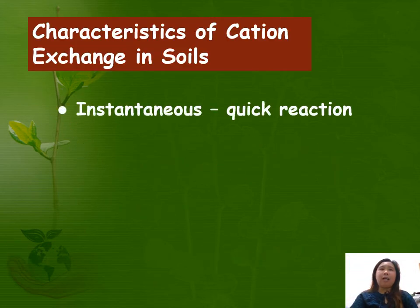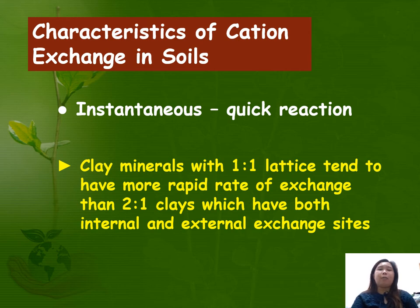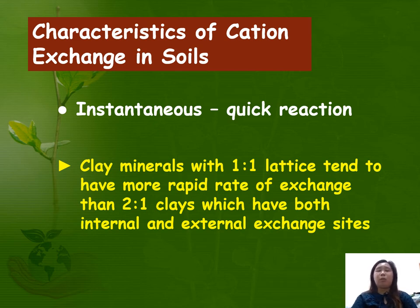Another characteristic is that the reaction is instantaneous — there is a quick reaction. Clay minerals with a 1:1 lattice tend to have a more rapid rate of exchange than 2:1 clays, which have both internal and external exchange sites. For example, 1:1 clay minerals such as kaolinite have a faster exchange rate than 2:1 clays like montmorillonite, vermiculite, and illite, because these 2:1 clays have both internal and external exchanges on the interlayers.